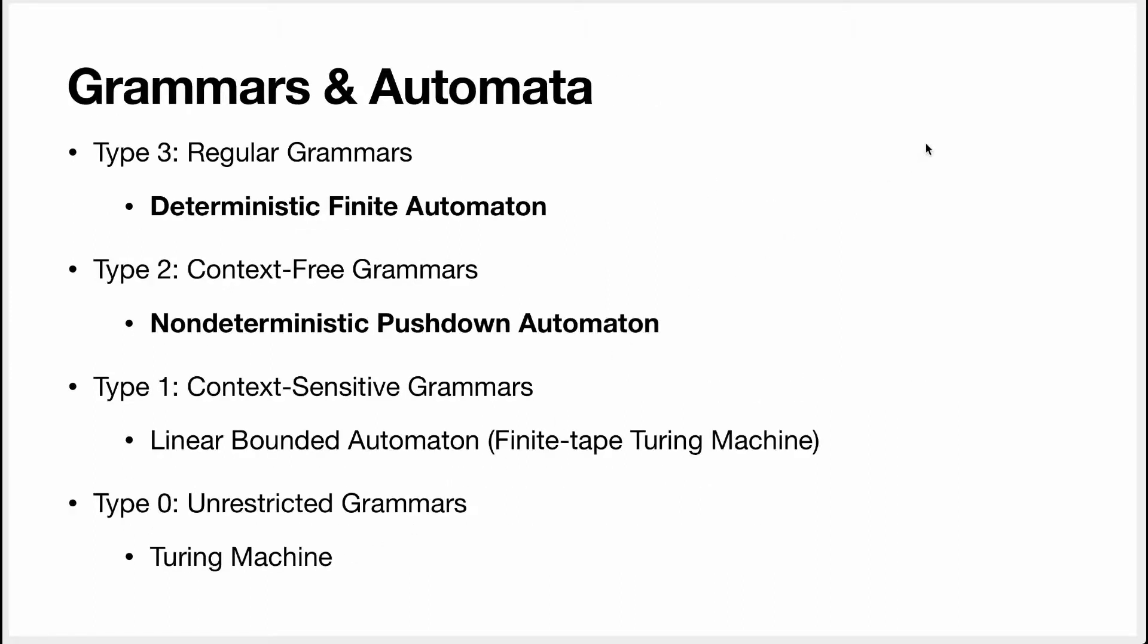One reason I think this Chomsky hierarchy is very cool is that every type of grammar is mapped to a type of automaton. And it's the simplest automaton that you can use to actually parse the grammar. So what's an automaton? An automaton is the formalization of an abstract machine. I'm pretty sure you all know at least one automaton, and it's this one, the Turing machine. A Turing machine is an abstract machine that can compute everything that is computable. It's a universal machine.